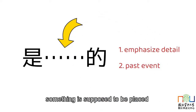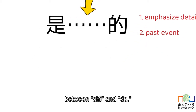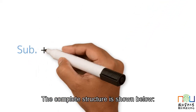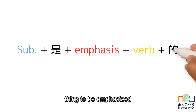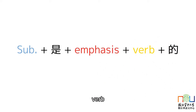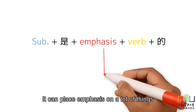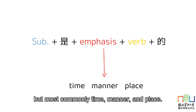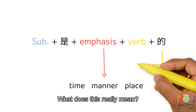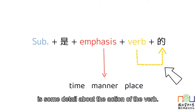Let's take a closer look. Something is supposed to be placed between 是 and 的. The complete structure is: Subject, 是, thing to be emphasized, verb, 的. It can place emphasis on a lot of things, but most commonly time, manner, and place. This means that the thing we emphasize is some detail about the action of the verb.